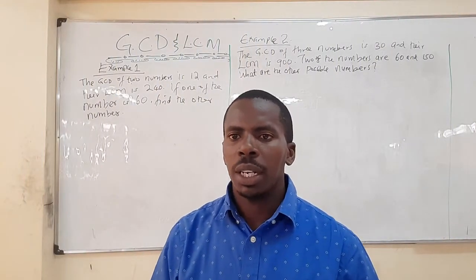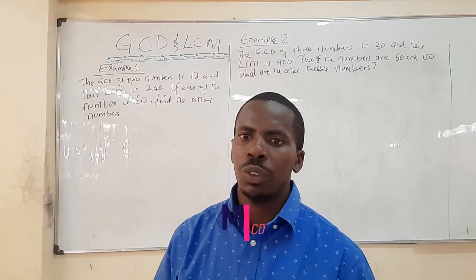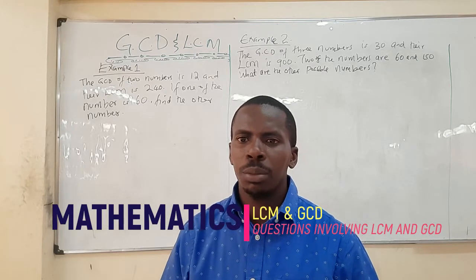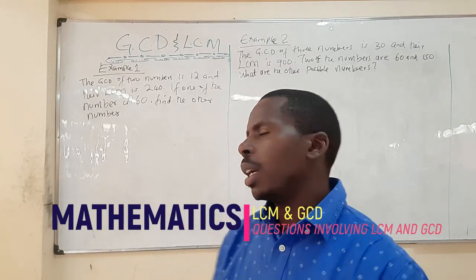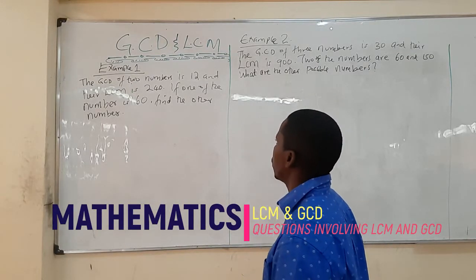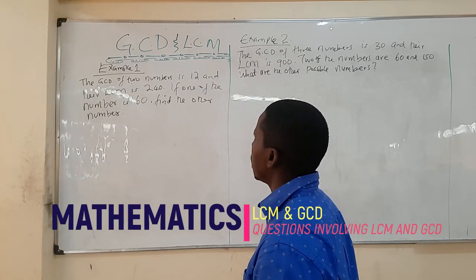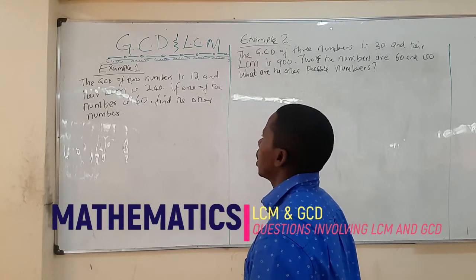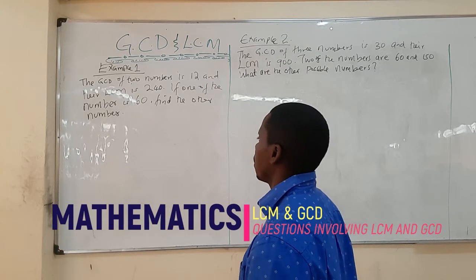Hello, welcome to another class. We are going to look at questions involving the LCM and GCD and we are going to look at three examples. Our first question reads that the GCD of two numbers is 12 and the LCM is 240. One of the numbers is 60 — find the other number.